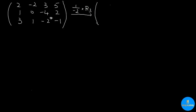By doing so, we will get 1 over negative 2 times 3, which is negative 3 over 2; 1 over negative 2 times 1, which is negative 1 half; 1 over negative 2 times negative 2, which is 1; and 1 over negative 2 times negative 1, which is positive 1 half. The other two rows are not changed, so we are going to copy them over.